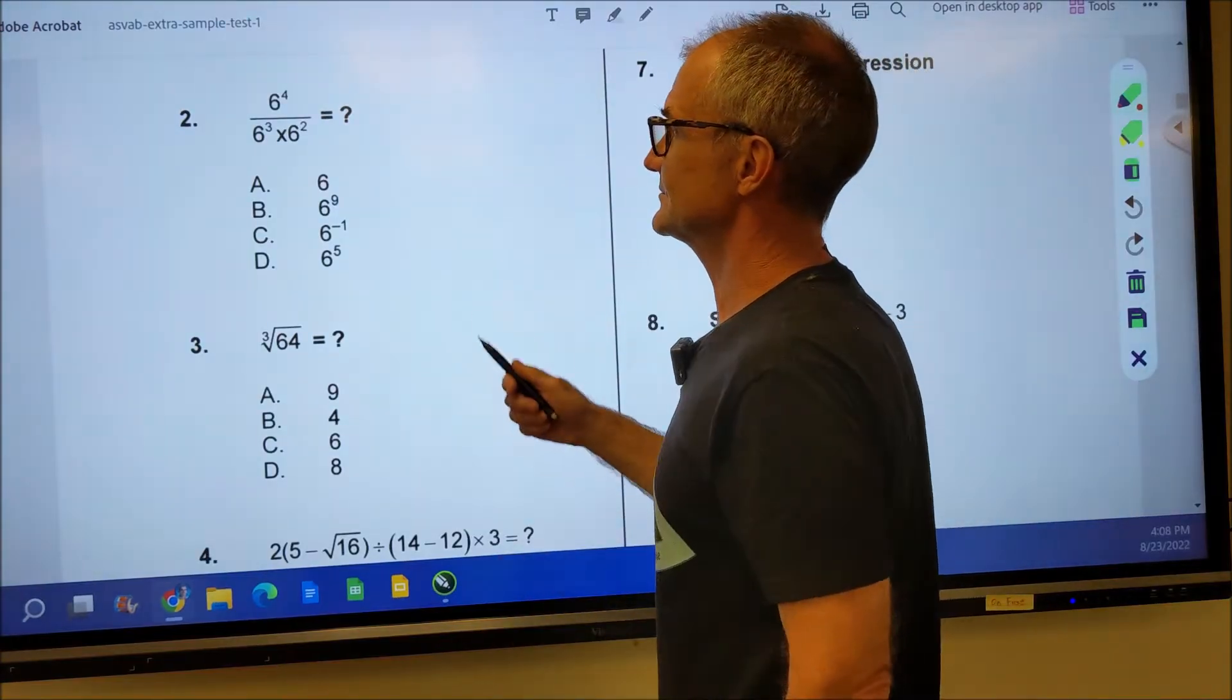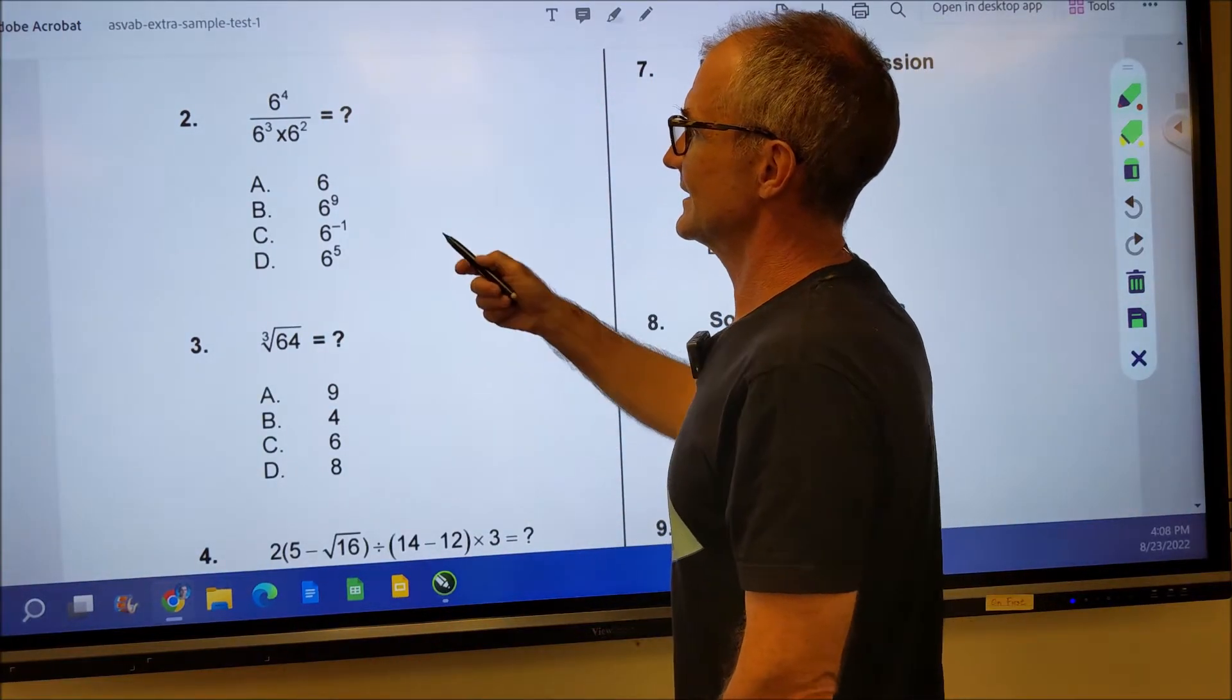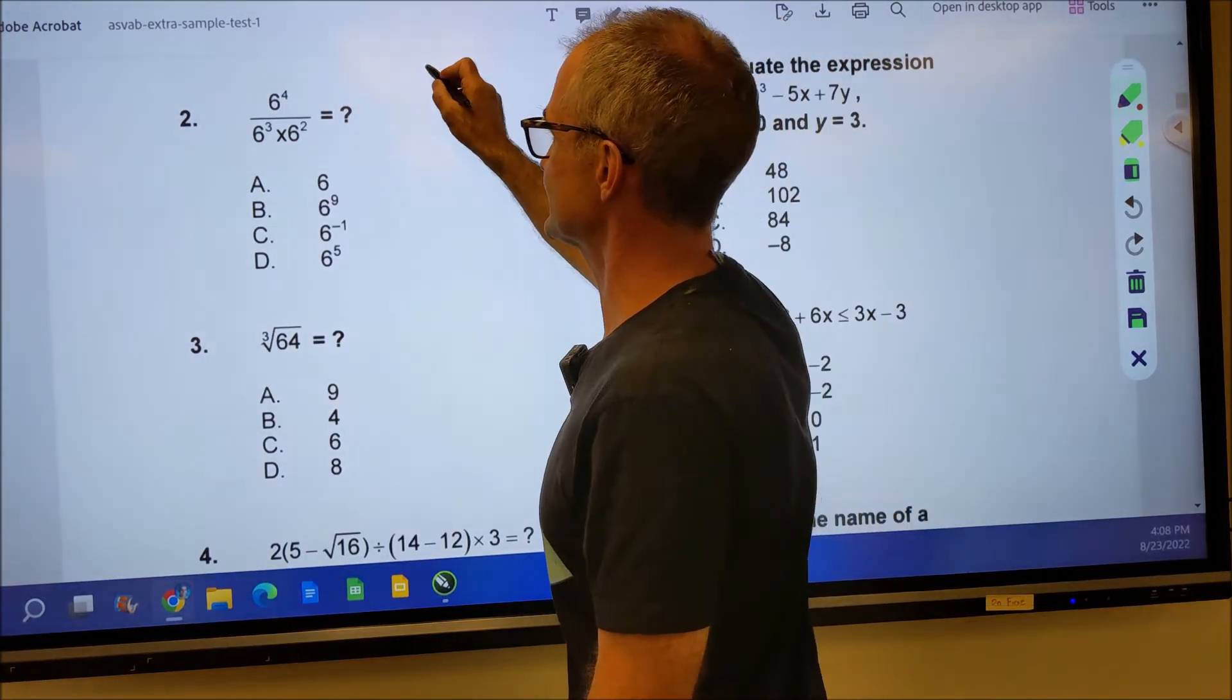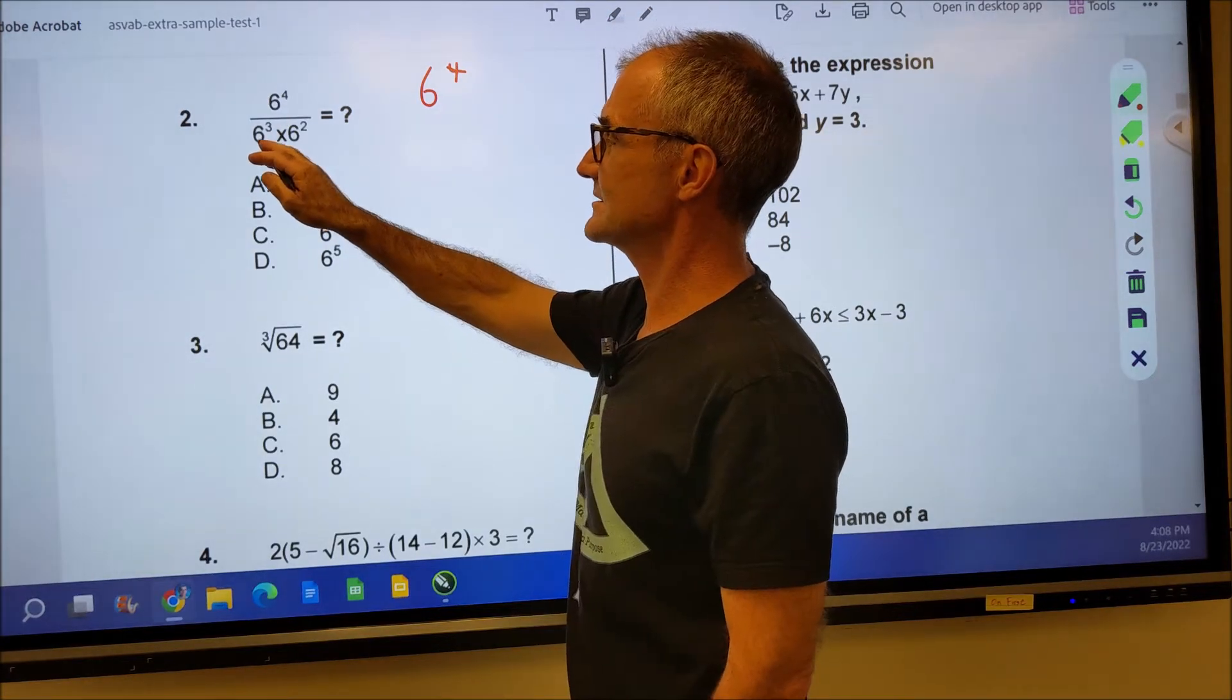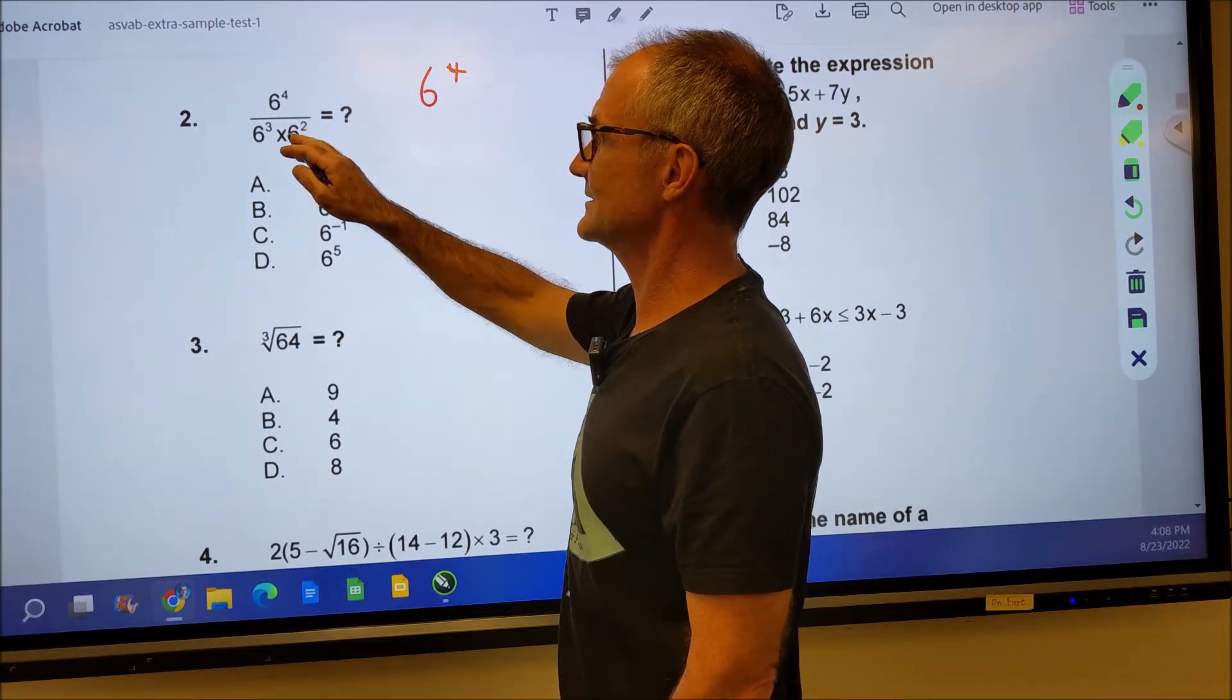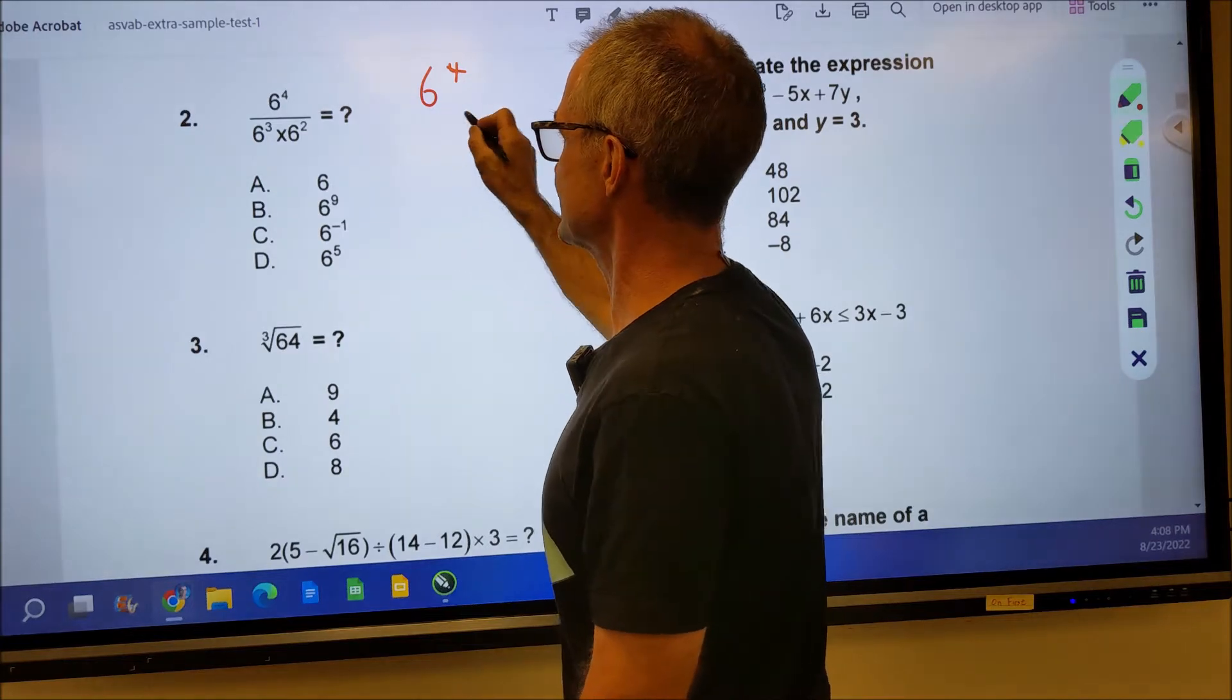Okay, problem number two is really about exponents. I think that's chapter five or so. This is a question about the rules of exponents. I'm going to keep that 6 to the fourth on top. The rule down here is you add the exponents. I have 6 to the third times 6 squared. They have the same base, different exponents. I add the three and the two to get 6 to the fifth.